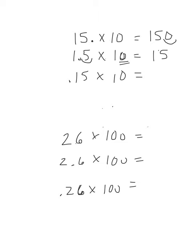Kind of like if I had 0.15 times 10. Well, again, I'd be moving it one place because I'm multiplying it by 10, the place value holder. So 0.15 times 10 is the same as 1.5.